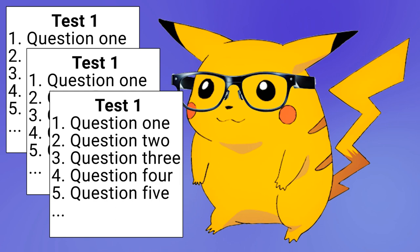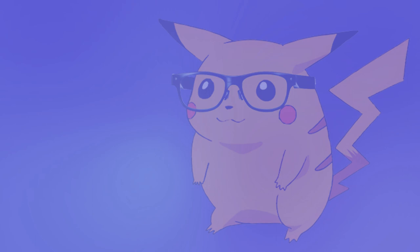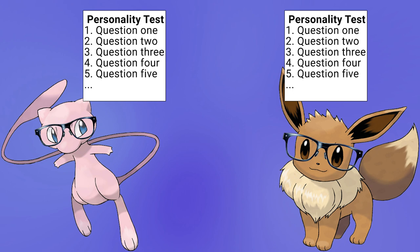In split-half reliability, the questions within a single test are split in half — say the even and odd questions. Going up a level, instead of looking at one person's ability to take the test, you now look at the ability of the people scoring it to be consistent. This is known as inter-rater reliability, and if there's good reliability here, it means that different people scoring it should yield the same results.